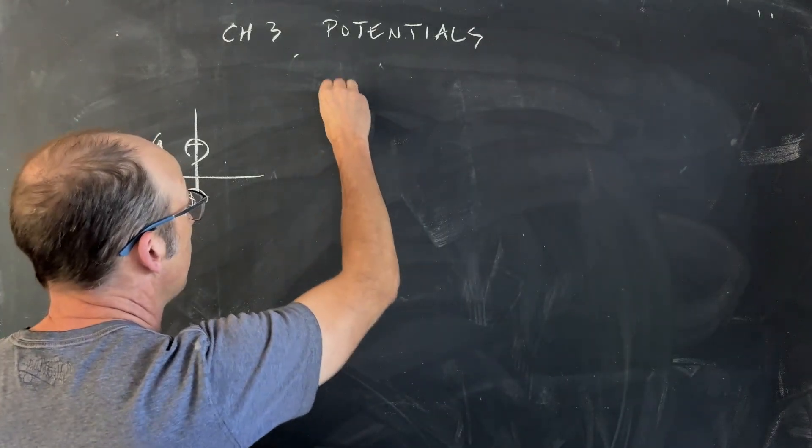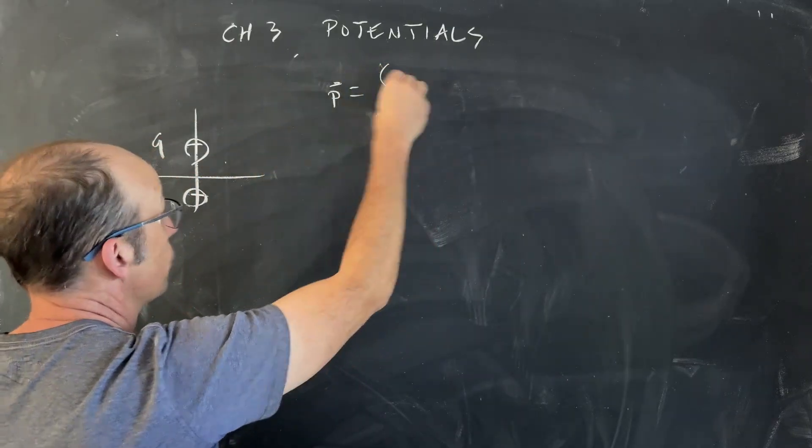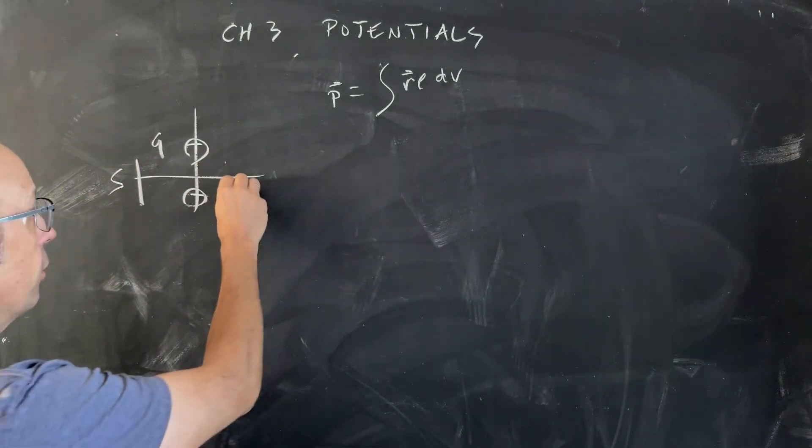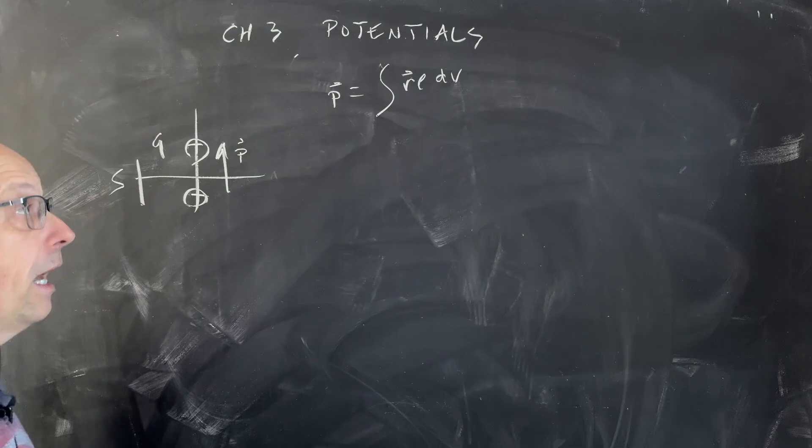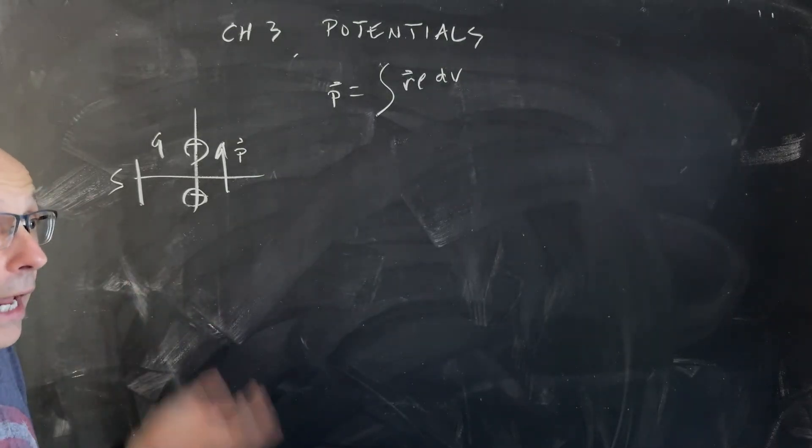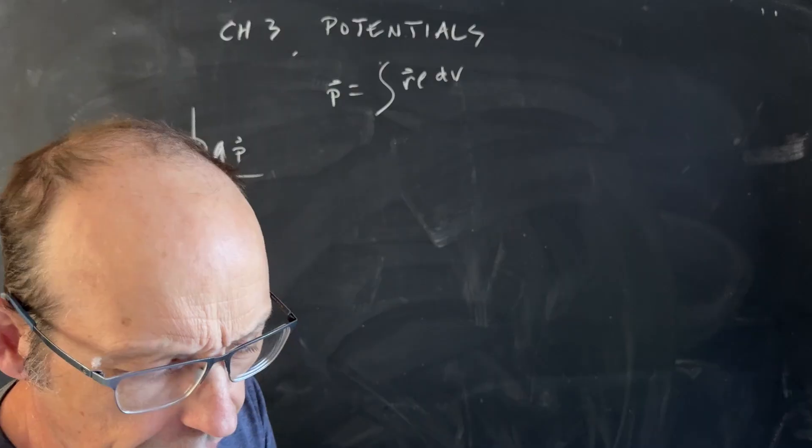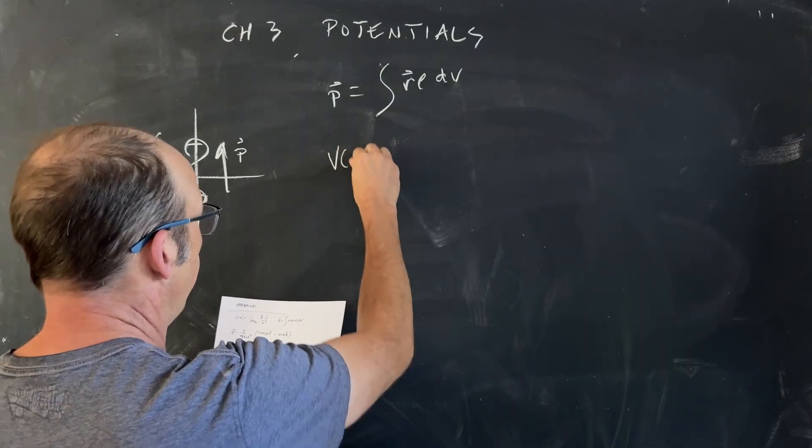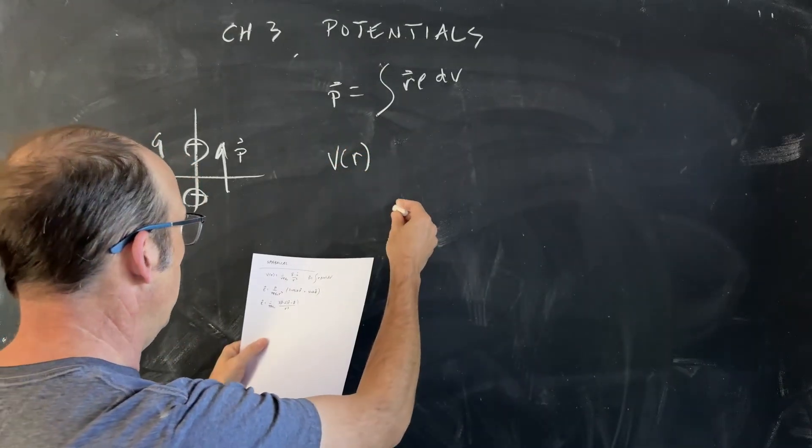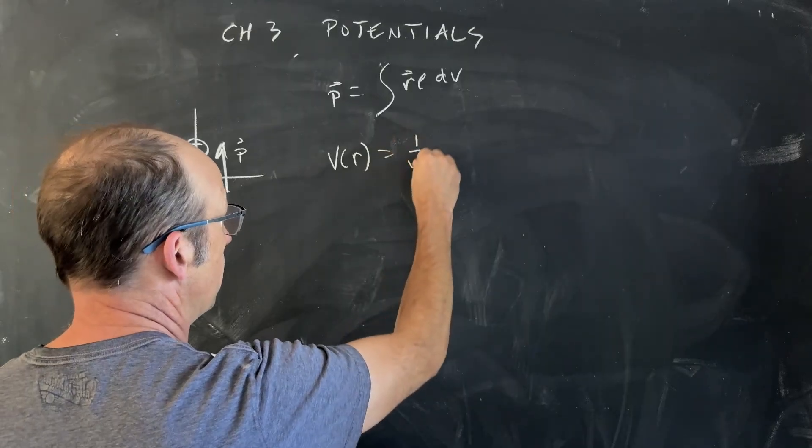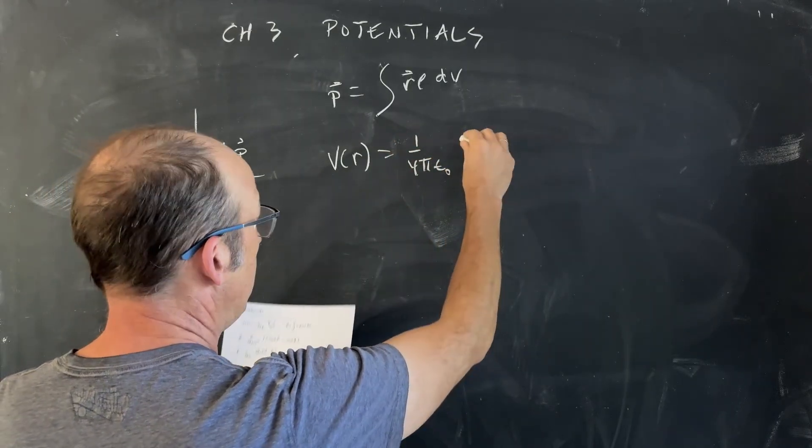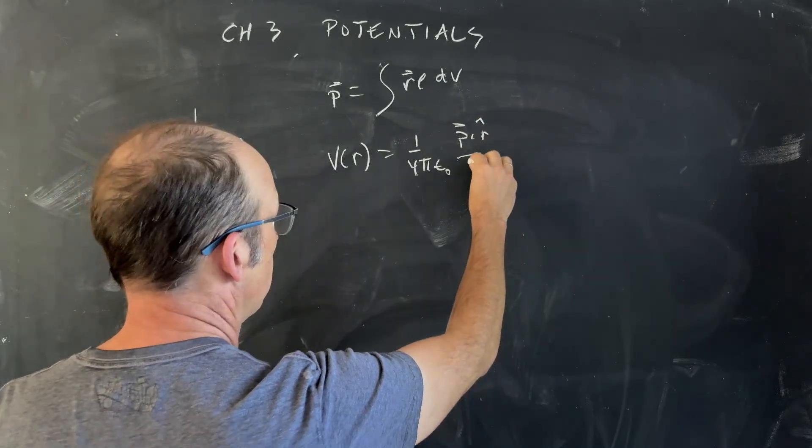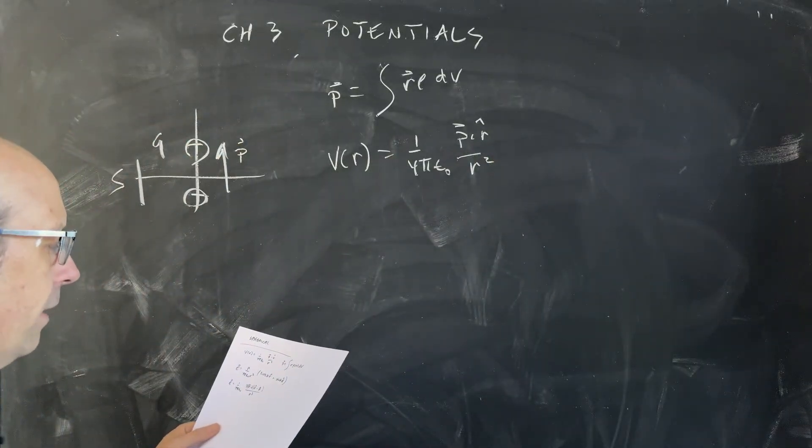So you can calculate the dipole moment P as the integral over all the charges, R, rho, dV. And so it's a vector. If you just have two charges, this would be P. And from that, I can calculate, once I know the dipole moment, I can calculate the electric potential everywhere. So I wrote this down because sometimes I forget this. I wrote it down so I wouldn't have to remember. So the potential is V of R, and that's a vector of R, is 1 over 4 pi epsilon naught, P dot R hat over R squared.